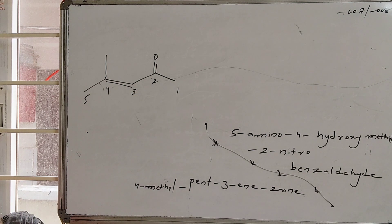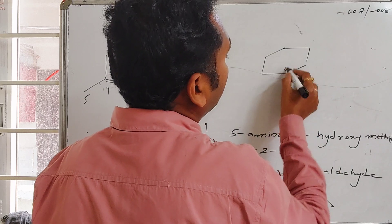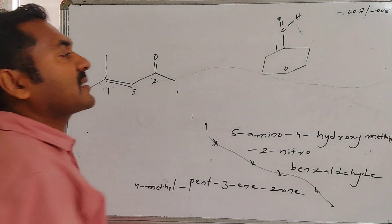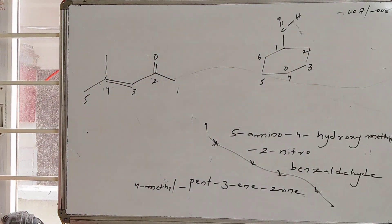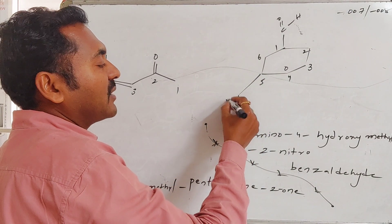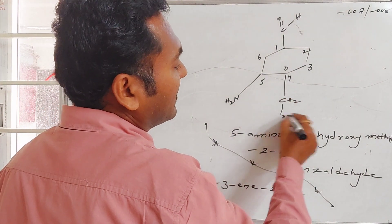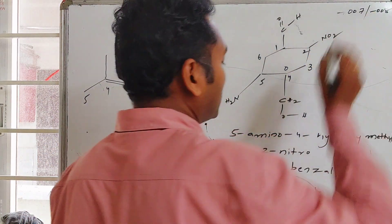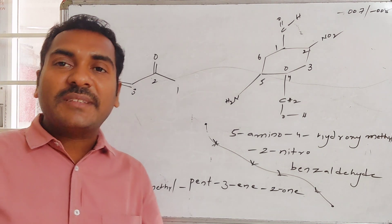The structure of mesityl oxide from its IUPAC name 4-methyl-pent-3-en-2-one is confirmed. For the benzene derivative, drawing benzene and labeling carbon one at the top, we number the positions one through five. At the fifth position we place the amino group (NH2); at the fourth position we place hydroxymethyl (CH2OH); at the second position we place nitro (NO2); and the aldehyde is at carbon one. This gives the complete structure of 5-amino-4-hydroxymethyl-2-nitrobenzaldehyde.